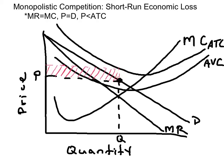The per-unit economic loss is the difference between ATC and the price. When you multiply by the quantity, we can shade in the region that represents the total economic loss. This firm loses less money by producing in the short run than it would if it shut down and paid its fixed costs. We can tell that because the price is greater than the average variable cost at the MR equals MC point.